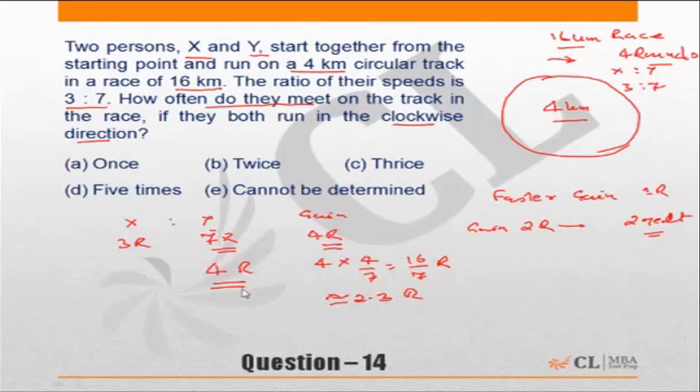4 rounds, he would have gained 2.3 rounds, which implies he would have crossed X 2.3 times, or met him twice. 2.3—obviously 0.3 doesn't make sense—so they would have met twice. The correct answer hence is choice B.